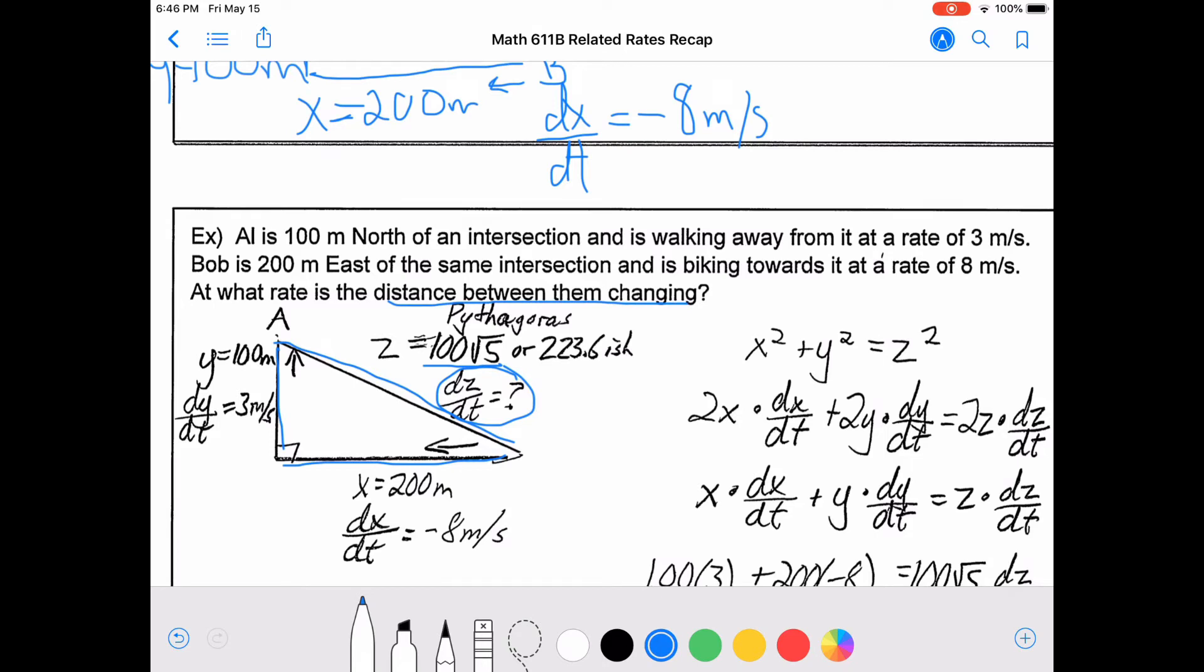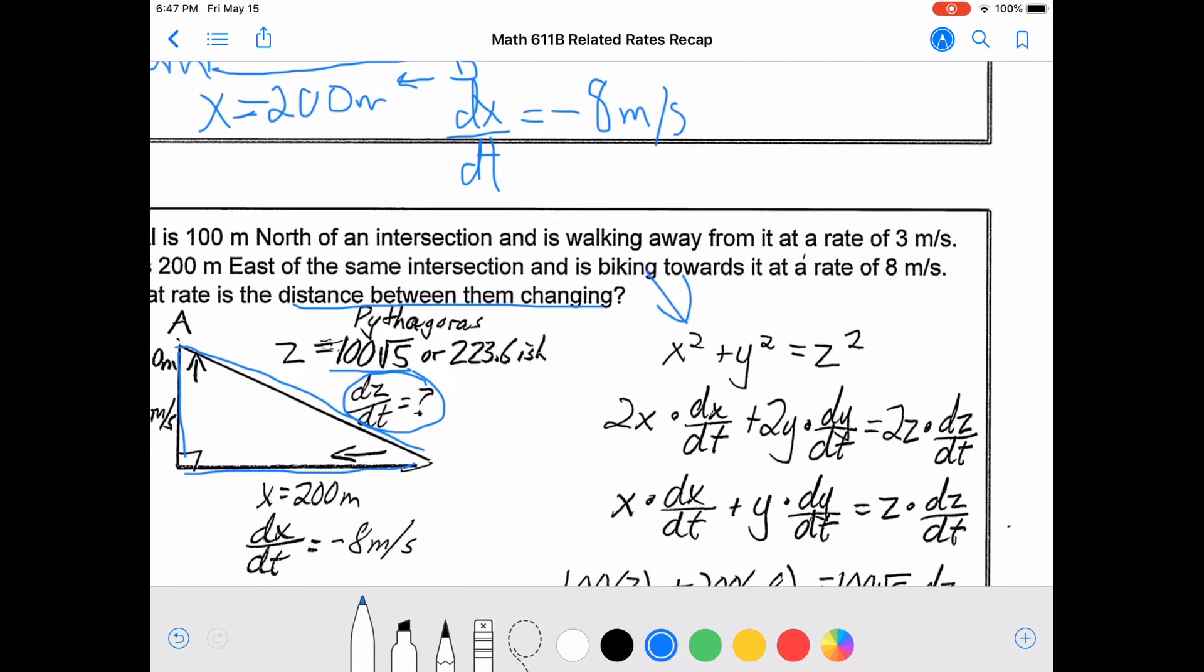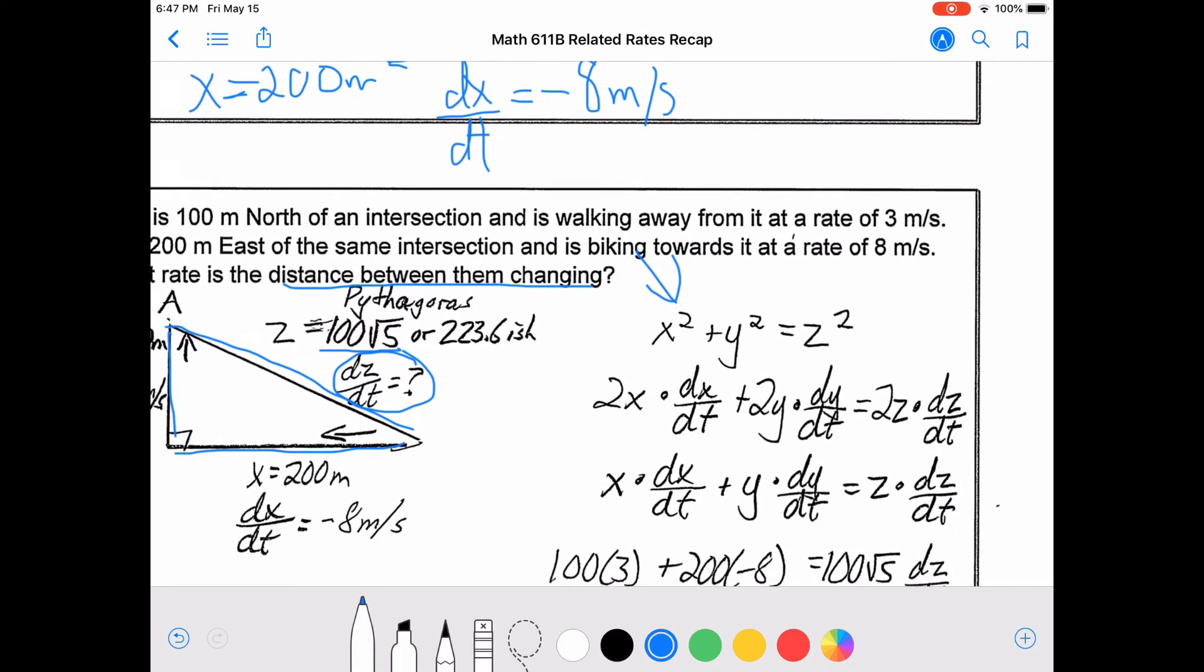So we've made a drawing, we've defined our derivatives, we've defined our variables. Now we need to make an equation, and then we differentiate that equation with respect to time. So x squared becomes 2x times dx over dt, y squared becomes 2y times dy over dt, and z squared becomes 2z times dz over dt.